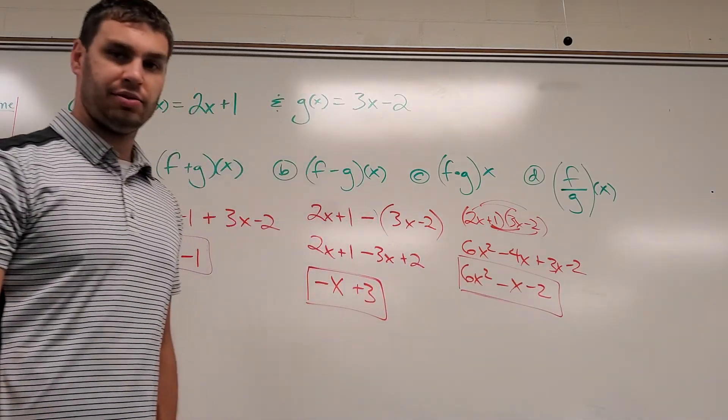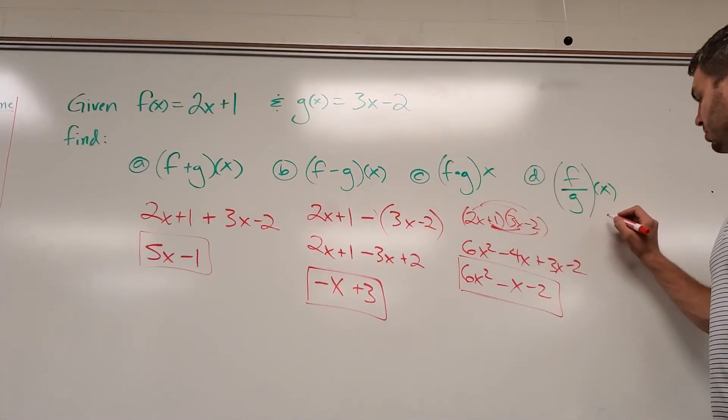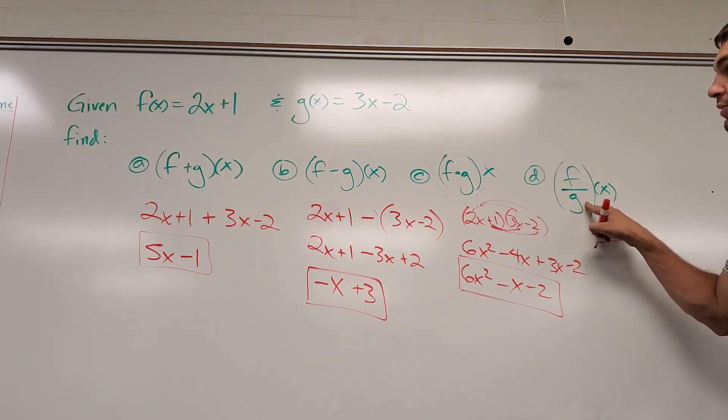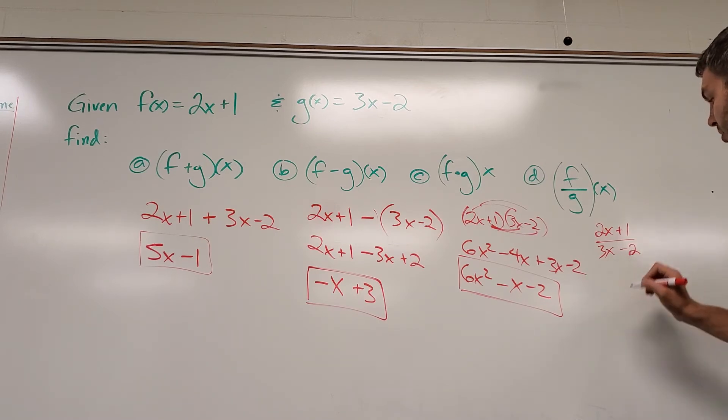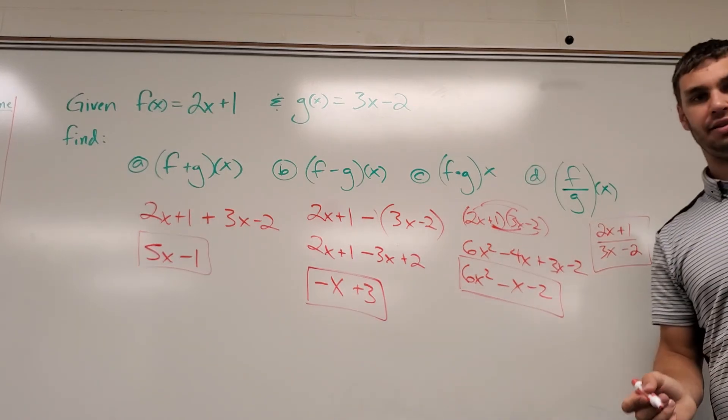And then the last one, f divided by g of x. So again, I'm going to put f of x, 2x plus 1, divided by g of x, 3x minus 2. And nothing really can simplify there. So that's going to be the solution.